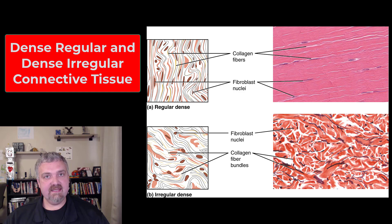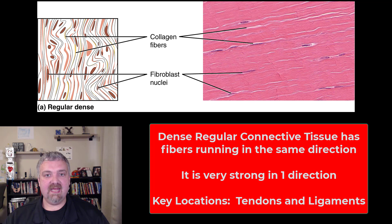Here's the key difference. Dense regular connective tissue has a bunch of collagen fibers — which is why it's dense — but they're all running in the same direction. This makes dense regular connective tissue super strong, but in only one direction.